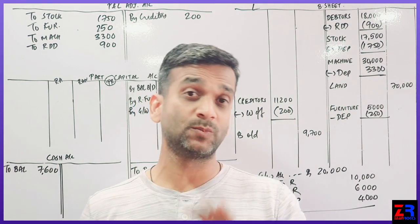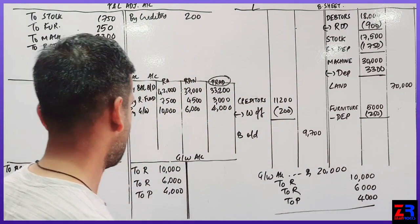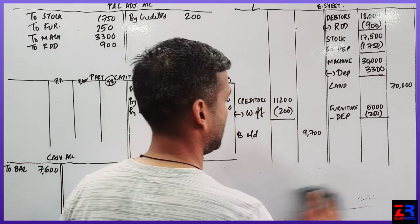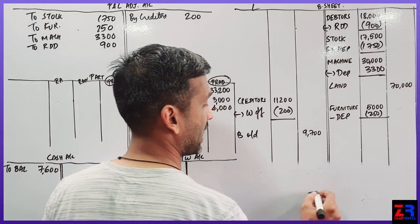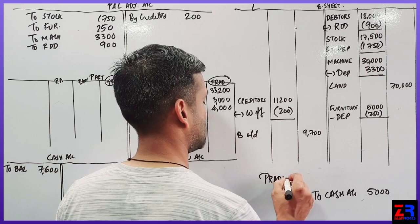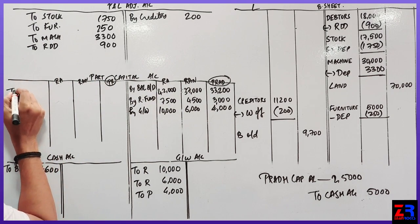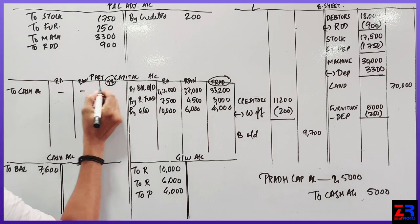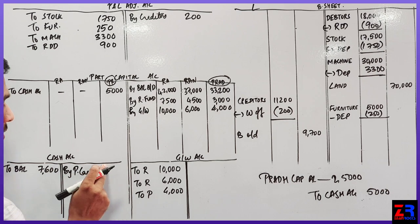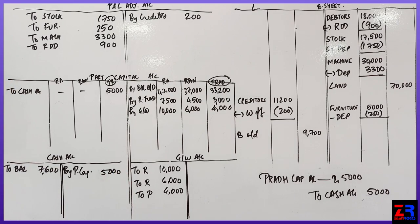Ab bola hai, jitna amount Pradhan ko retirement pa de na hai, us mein se 5000 rupay hum cash dhe. Entry kya hai, cash dhe na hai, paisa jayega, toh cash, kitna lena hai, five, kisko dhe na hai, Pradhan's capital account debit five. Pradhan kya hai, by cash. Paisa Pradhan's capital. That means we complete the problem.